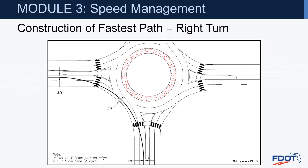When constructing the right turn fastest path, we use the same offsets: three feet from a painted edge line, five feet from a face of curb and gutter, and again either three or five feet on the exit — three feet from a paint line or five feet from a face of curb and gutter.